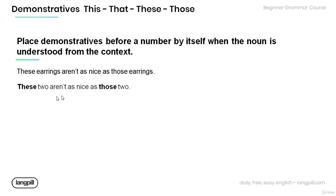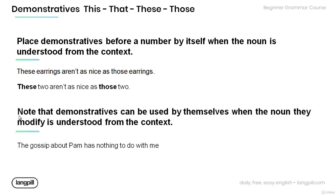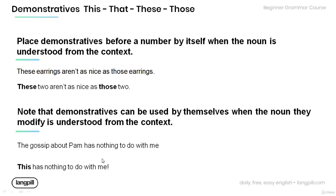These two aren't as nice as those two. Also note that demonstratives can't be used by themselves when the noun they modify is understood from context. Have a look at the sentence below and find a noun that the demonstrative modifies and that can't be understood from context. The gossip about Pam has nothing to do with me. This has nothing to do with me.